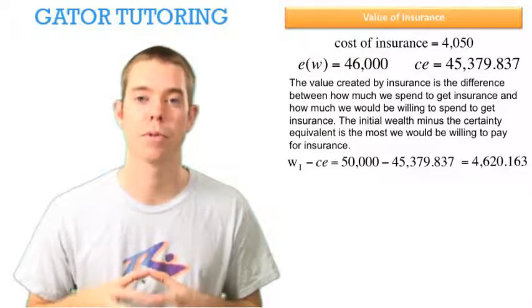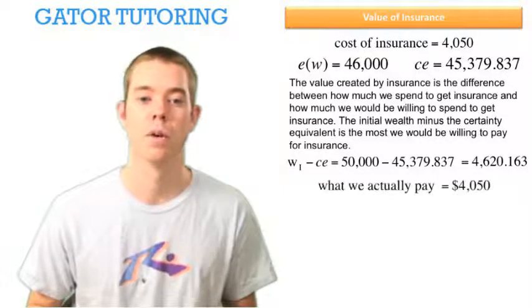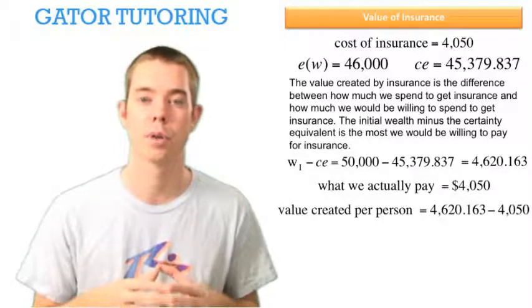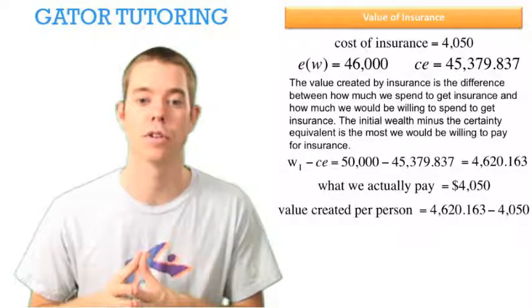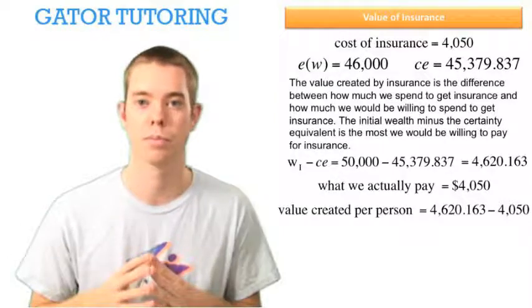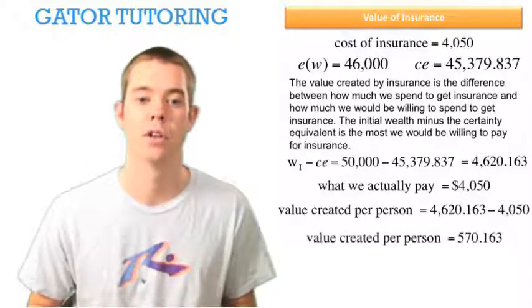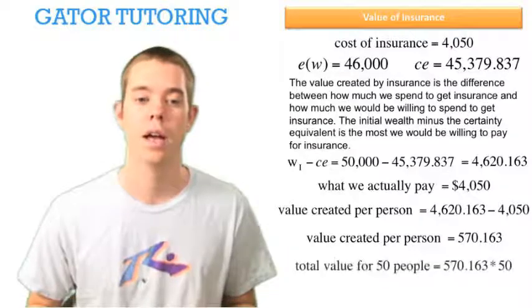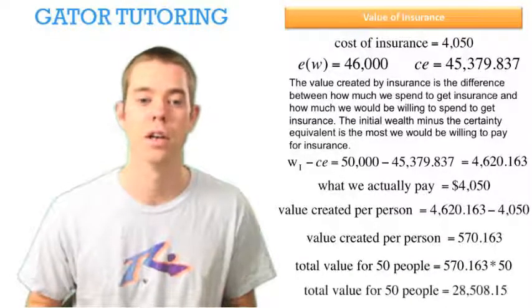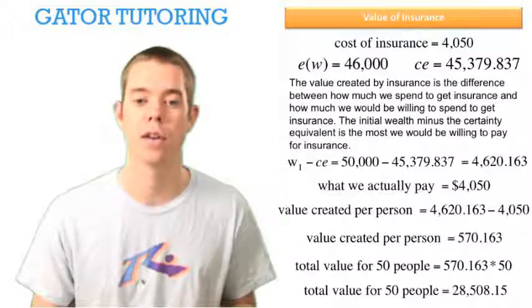That's the most we'd be willing to pay for insurance, but what we actually pay in a competitive insurance market is $4,050. So the difference between these two numbers is the value created per person. An individual is willing to pay $4,620 but only has to pay $4,050, so they're retaining consumer surplus — the insurance market has created value for every person. The value created per person is $570.163, and the total value for all 50 people is $570.163 times 50, which equals $28,508.15.